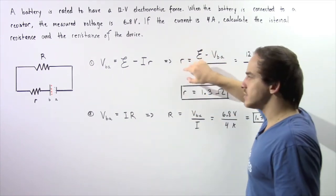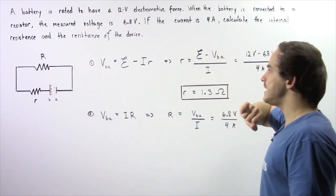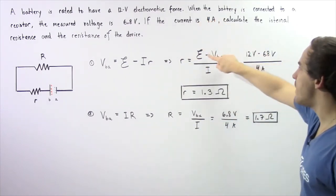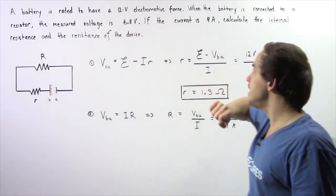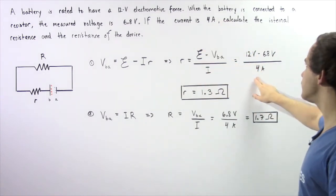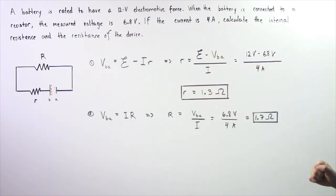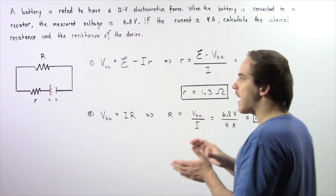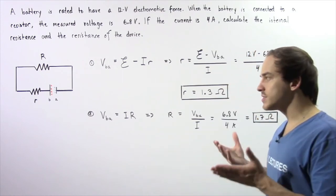The internal resistance of the battery, given by lowercase r, is equal to the electromotive force of 12 volts minus the terminal voltage of 6.8 volts, divided by our electric current of 4 amps. That gives us a resistance of 1.3 ohms, which is the internal resistance of our battery.